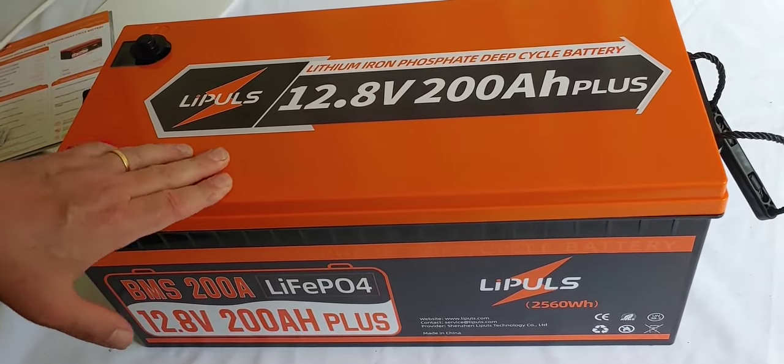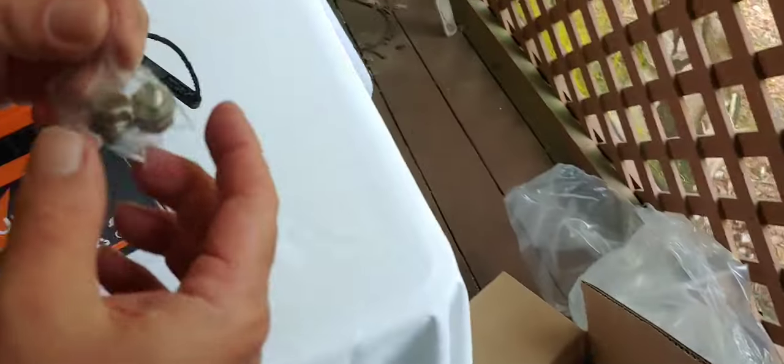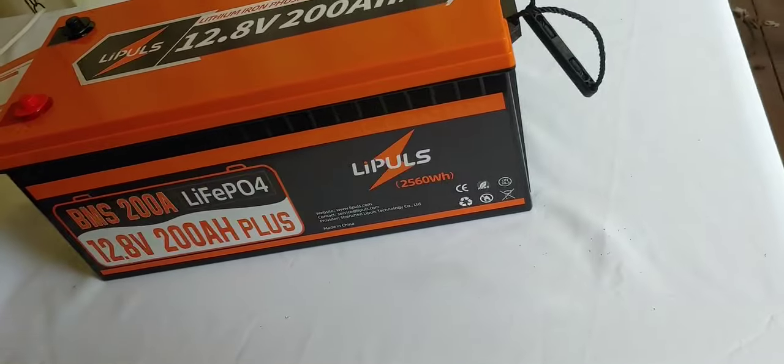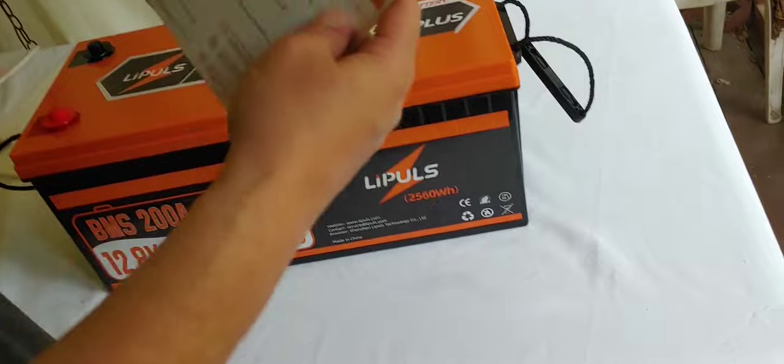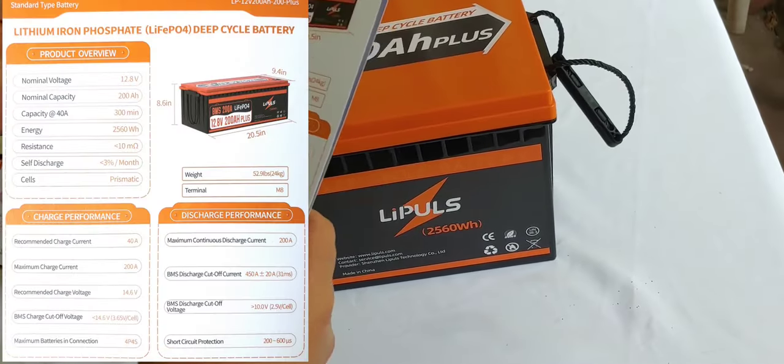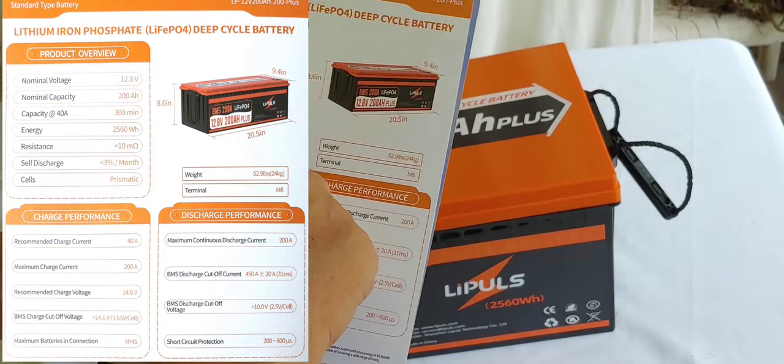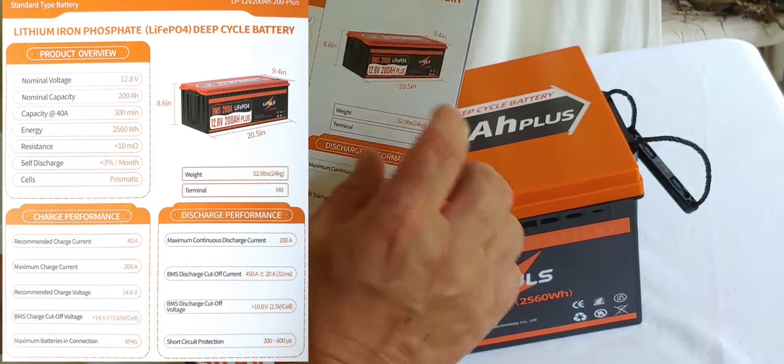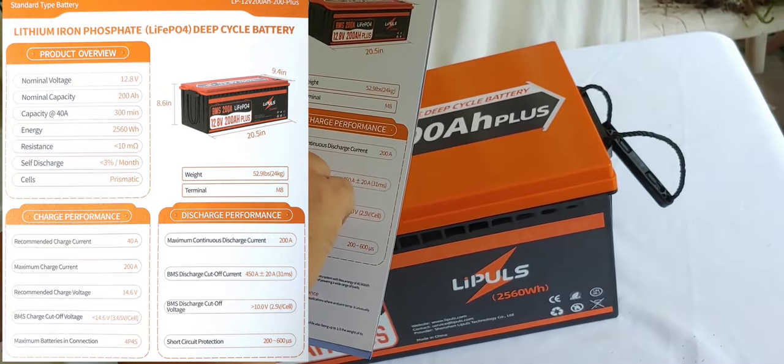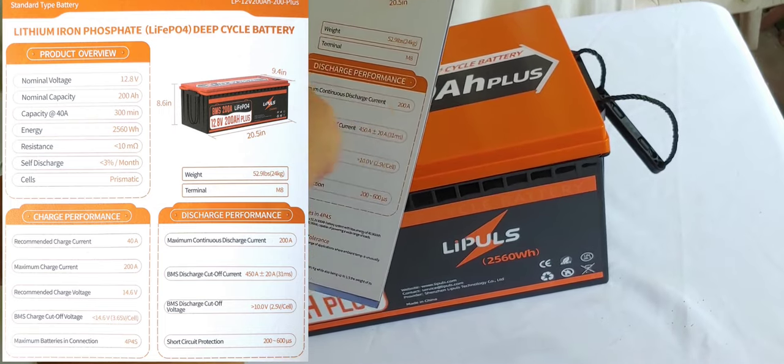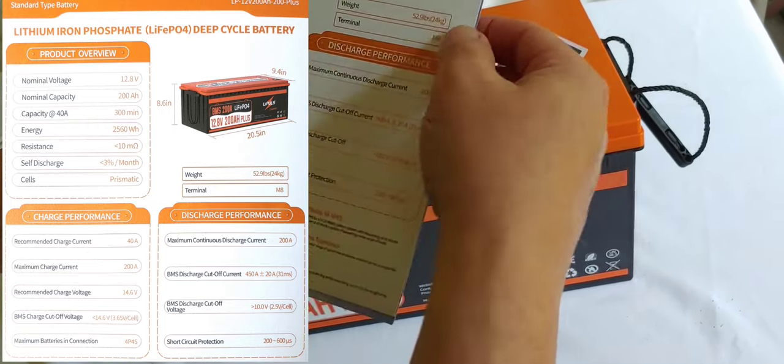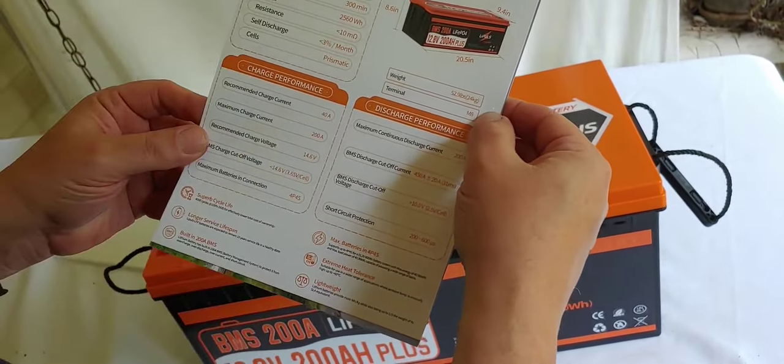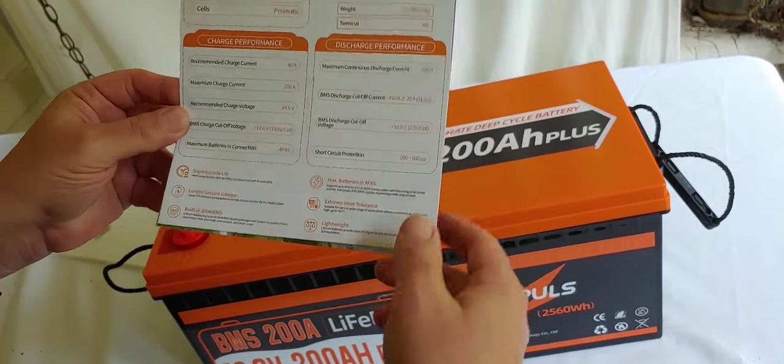So it was packaged fairly well, and all there was was these backup bolts, M8s, like most of them come with. So there's no manual, only these cards. It says nominal voltage 12.8, we knew that. Nominal capability 200 amp hours. Okay, so it is 2560 watt hours. We knew that just because of the type it is. It says the weight is 52 pounds. And those are M8 terminals, so the bolts are 8 millimeters.